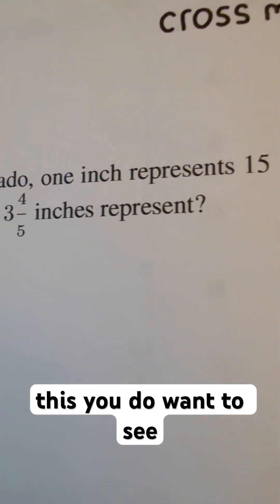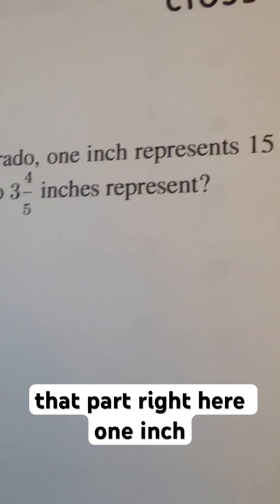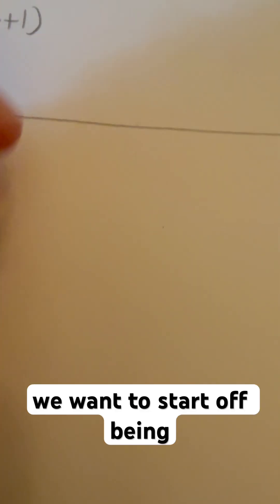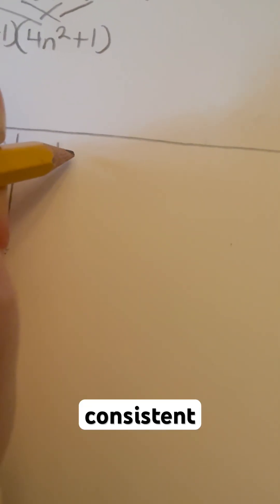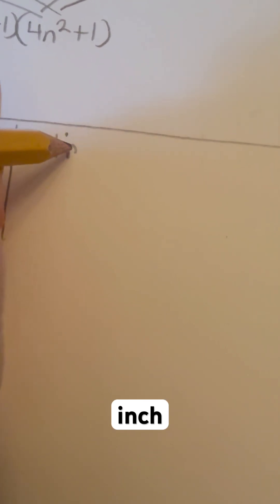When we are starting with this you want to see that part right here. One inch is represented of 15 miles. So when we start off our setup we want to start off being very consistent. We have one inch and that is worth 15 miles.